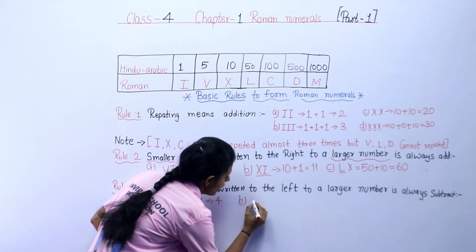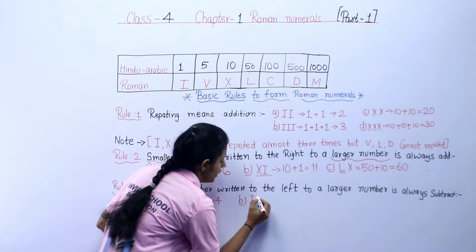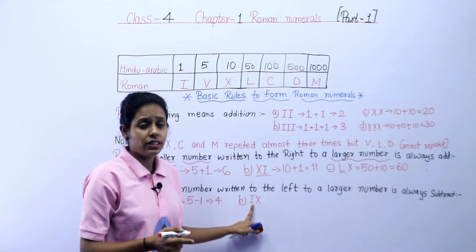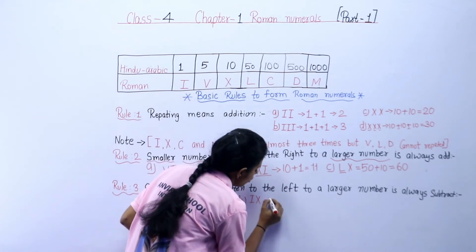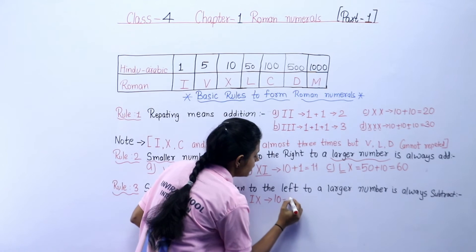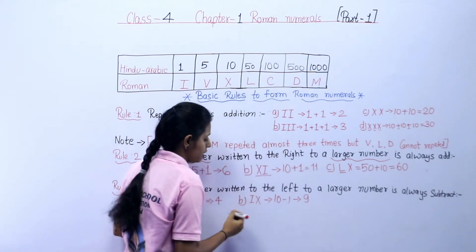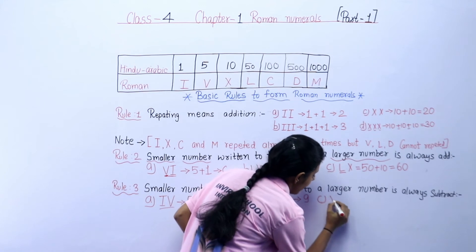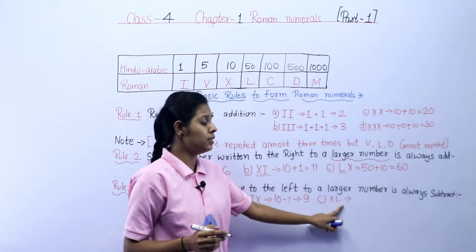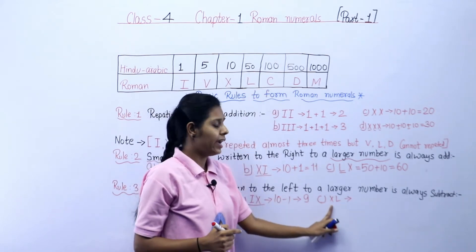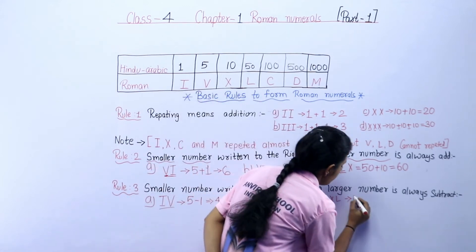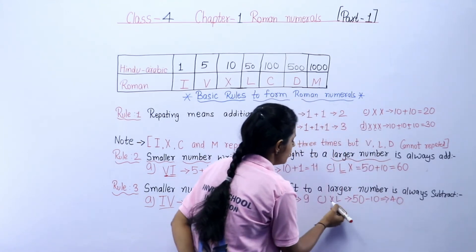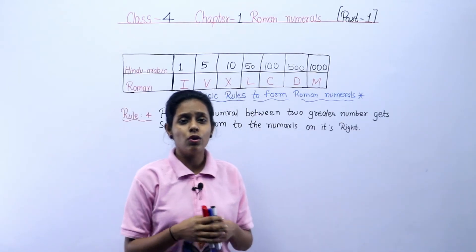One more example: IX — I means 1 and X means 10. The smaller number is to the left of the larger number, so 10 minus 1 is equal to 9. This symbol is used to write number 9. Next, XL — X means 10, L means 50, and L is the bigger number. So 50 minus 10 is equal to 40. This symbol is used to write 40.